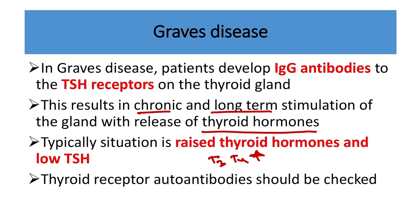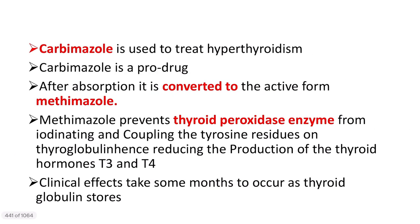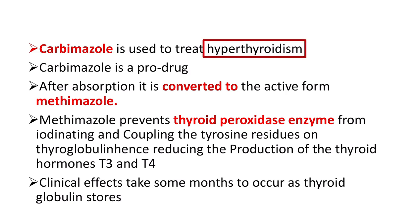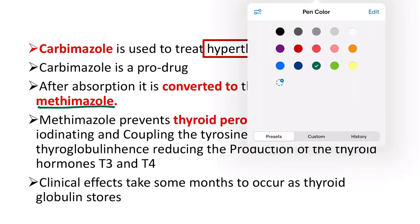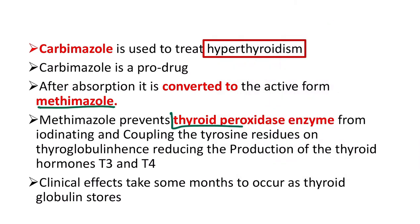For treatment of Graves' disease, carbimazole is one of the important drugs used to treat hyperthyroidism. Carbimazole is a prodrug, and when it enters the body it is converted to methimazole. Methimazole then prevents — that is, inhibits — the thyroid peroxidase enzyme.